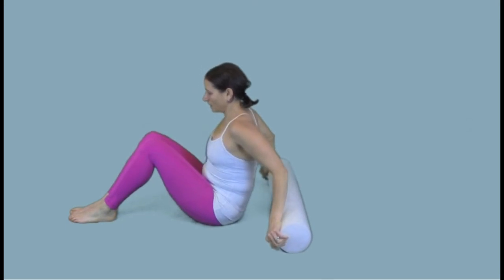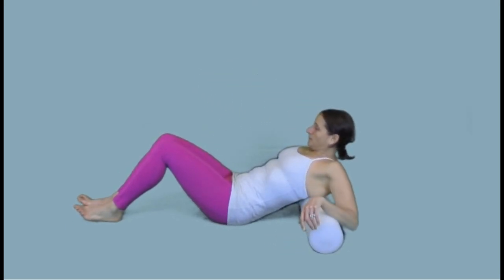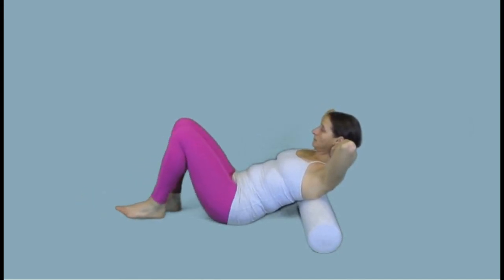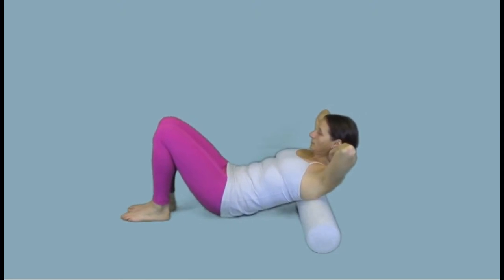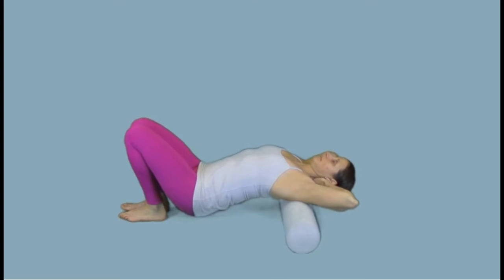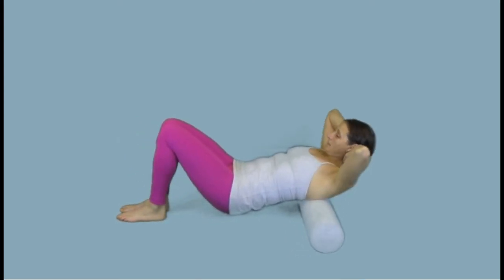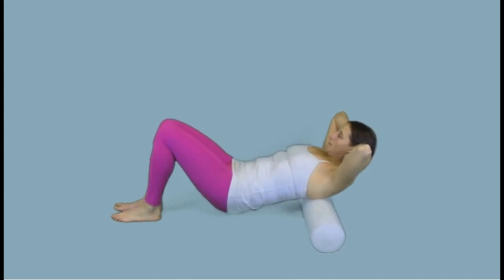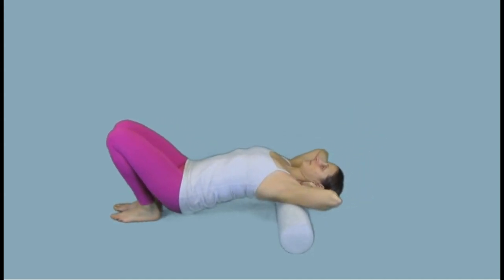Start by placing the roller just below the tips of your shoulder blades on your back. Interlace your fingers behind your neck and bring your legs in close enough that you can easily support the weight of your hips. Roll towards your heels and open your back up over the roller.